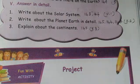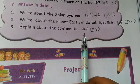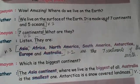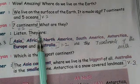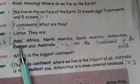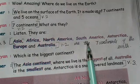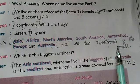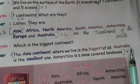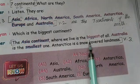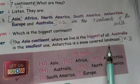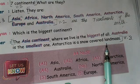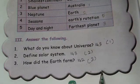Explain about the continents - page number 147. There are 7 continents on our Earth: Asia, Africa, North America, South America, Antarctica, Europe, and Australia. Asia, the continent where we live, is the biggest of all. Australia is the smallest one. Antarctica is a snow-covered landmass. Cover the details of each continent in your answer for a very good response.